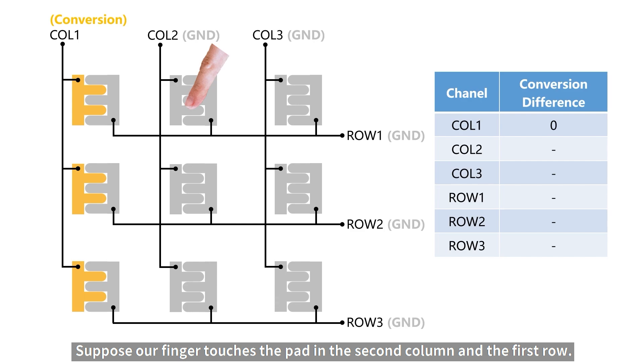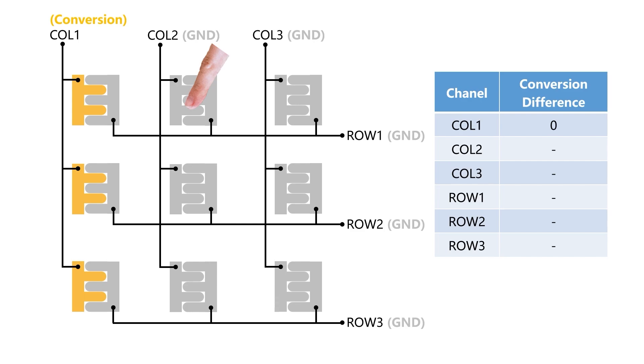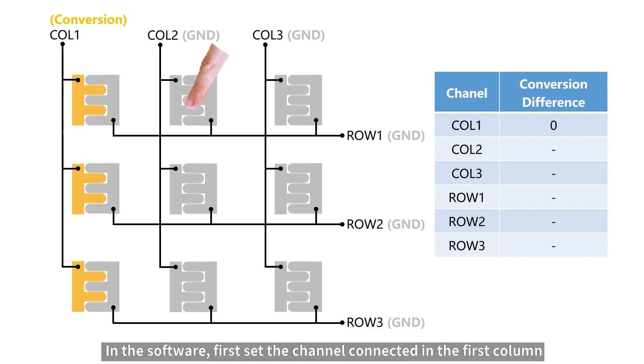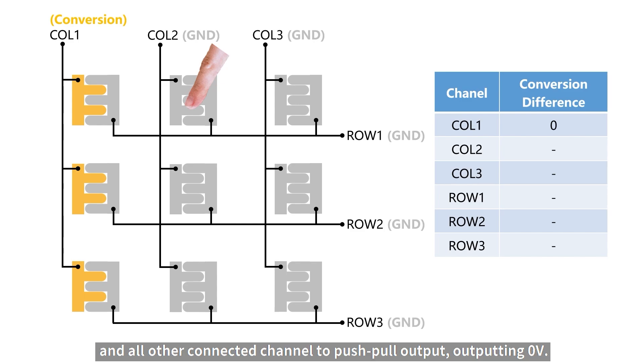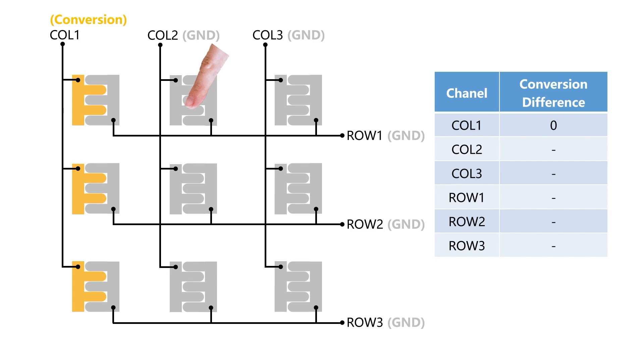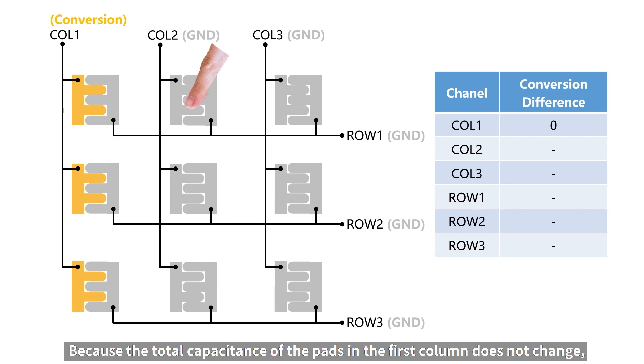Suppose our finger touched the pad in the second column and the first row. In the software, first, set the channel connected in the first column to the touch conversion function, and all other connected channels to push-pull output outputting 0V. Because the total capacitance of the pad increases, when the touch conversion is performed, the difference obtained will be greater than 0. However, the pads in the first column do not change.